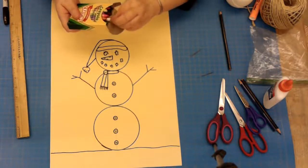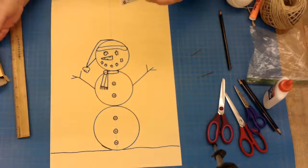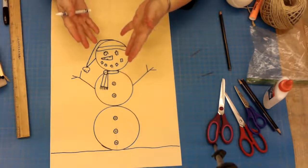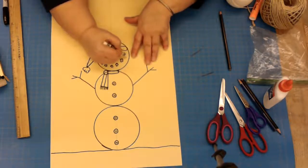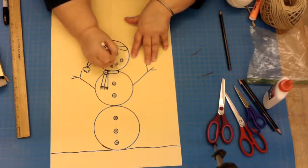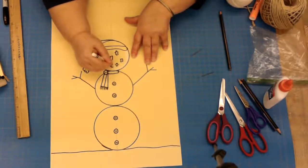If you worked on a paper that is colored, you can color in the actual snowman part if you've got a white crayon. I don't think it shows up very well on the camera.